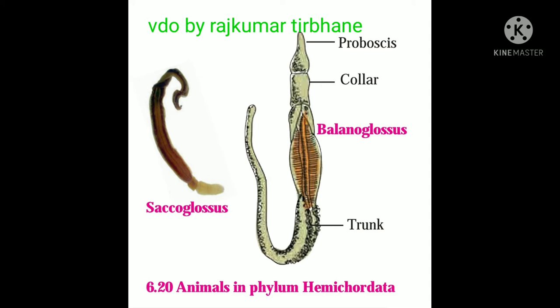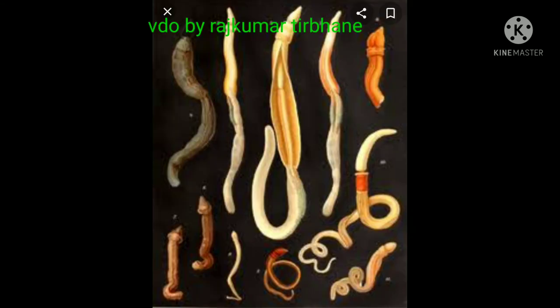These animals are also called acorn worms. These are marine animals, meaning they live in the ocean. They live in burrows in sand.